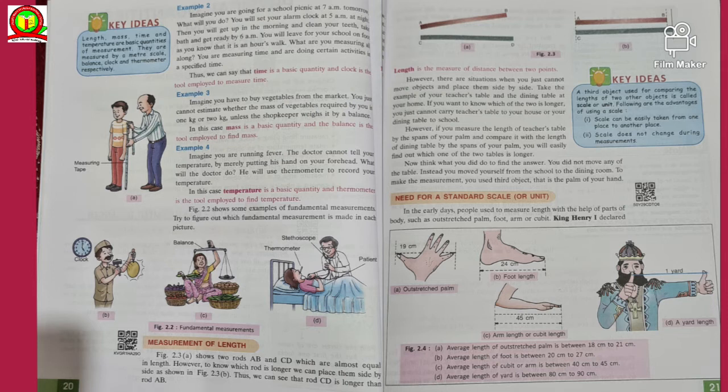However, there are situations when you just cannot move objects and place them side by side. Take the example of your teacher's table and the dining table at your home. If you want to know which of the two is longer, you just cannot carry teacher's table to your house or your dining table to school. However, if you measure the length of your table by the span of your palm and compare with the length of the dining table by the span of your own arm, you will easily find out which one of the two tables is longer.